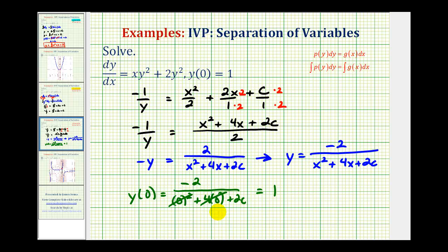Well this is zero and this is zero. This is going to simplify to negative two over two c must equal positive one, by the initial condition, and therefore c must equal negative one.